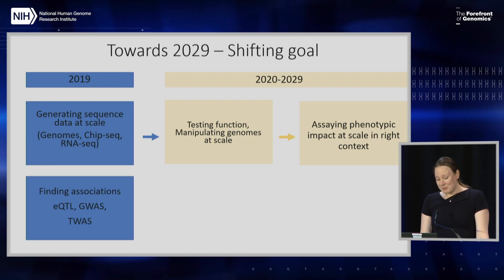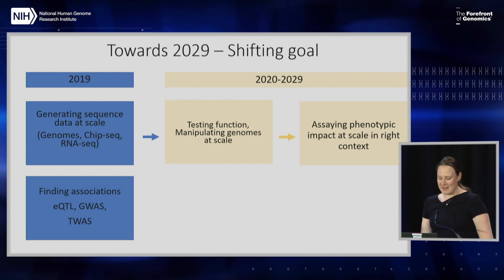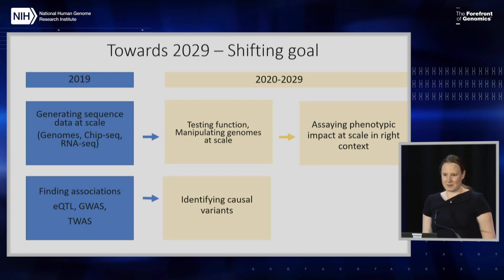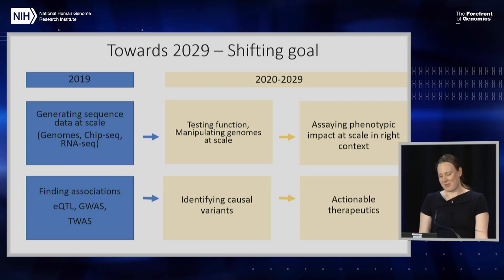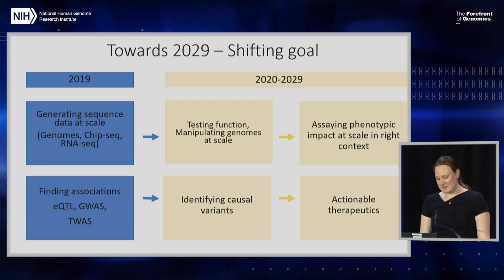In 2019, we're finding associations using a variety of methods. We need to get to identifying causal variants. I think we need to use functional approaches to do this, and once we can identify causal variants, we can really get to actionable therapeutics. In terms of implementing this plan, what are the specifics of what I predict for 2029?